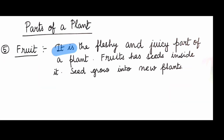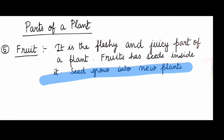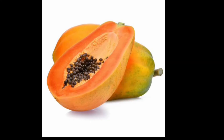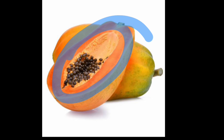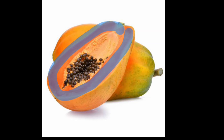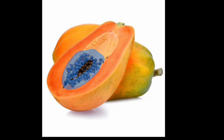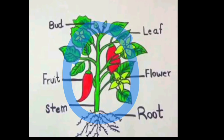Fruit is the fleshy and juicy part of a plant. Fruits have many seeds inside them, and these seeds grow into a new plant. Here you can see a papaya: the black parts are the seeds inside the fruit, and the orange part is fleshy and juicy in nature.